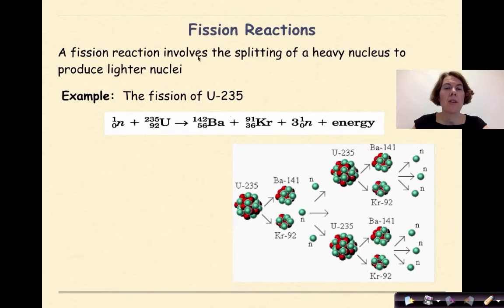A fission reaction involves the splitting of a heavy nucleus to produce lighter nuclei. So for example, the fission of uranium-235. We have our target nucleus right here, we have a particle that is going to smash into this target nucleus, and then we're going to produce barium-242, krypton-91, three neutrons, and a bunch of energy.